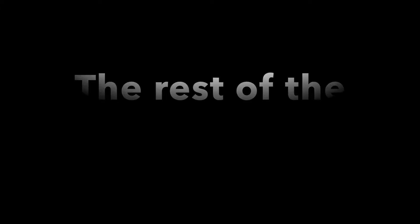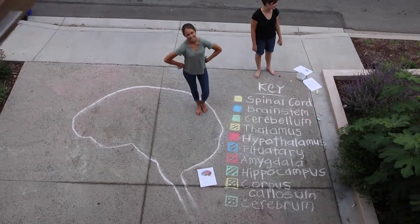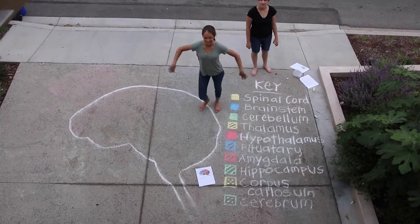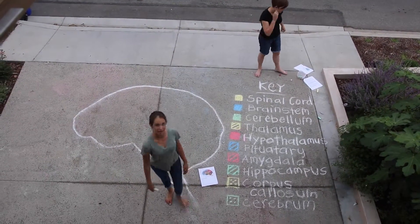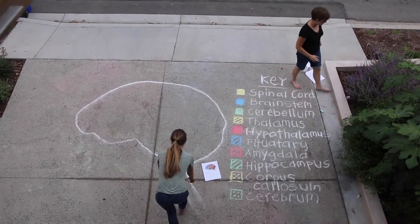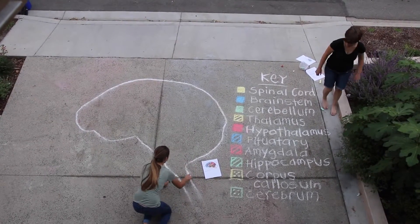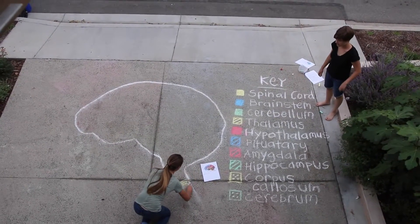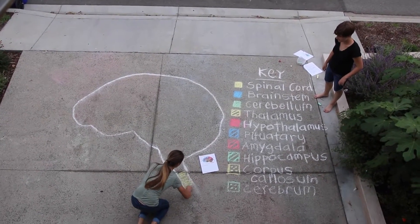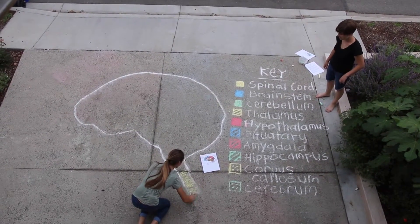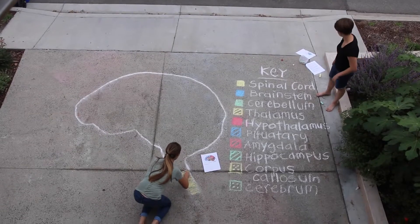Now on to the difficult part — the rest of the brain. We're drawing the spinal cord. The spinal cord is the pathway for neural fibers traveling to and from the brain. It controls our simple reflexes.